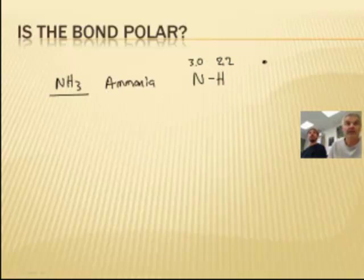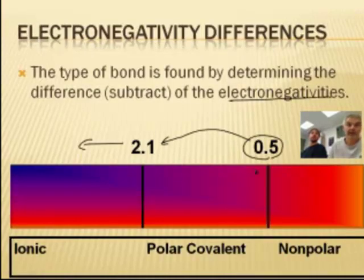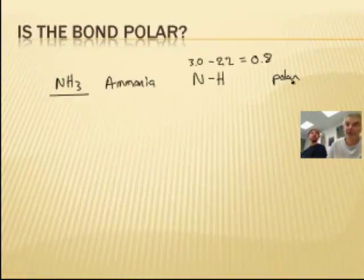So if you take a difference between those two, it's going to subtract. You get, of course, 0.8. Well, 0.8, if we go back to our chart, 0.8 is here. That's a polar covalent bond. So this one would be a polar bond. We can say polar just for short instead of a polar covalent bond, although that's more correct.